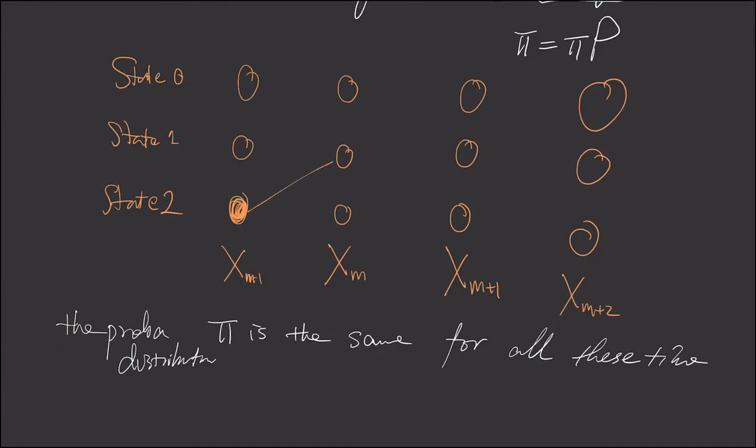We can have our Markov chain at m-1 here, and then jump to state 1 at time m, continue to be in state 1 at time m+1, and jump to state 0 at m+2.